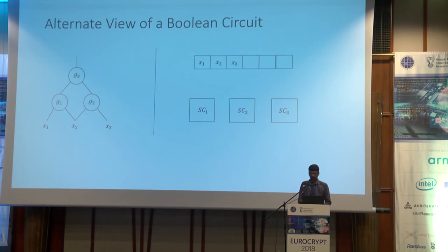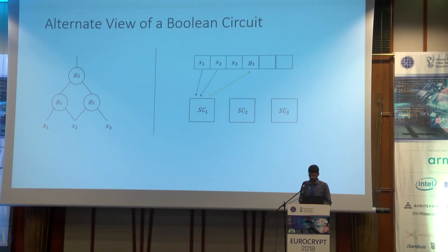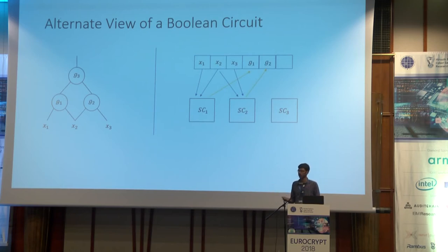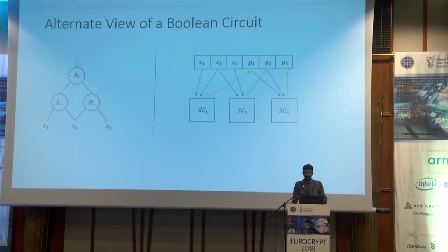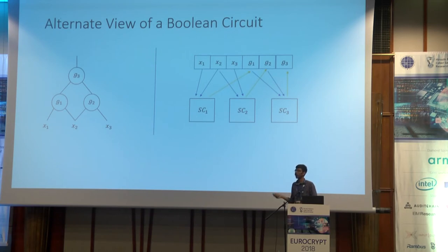The first step circuit SE1 reads X1 and X2 from the database, computes the output of gate G1, and writes it back to the database. To garble this Boolean circuit in this form, we need to garble the database — which contains all intermediate values along with the input — and we also need to garble these step circuits.